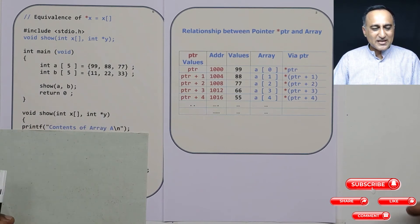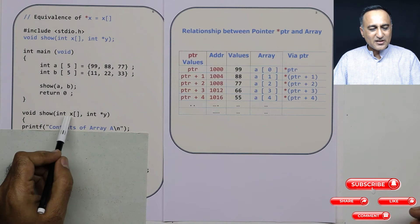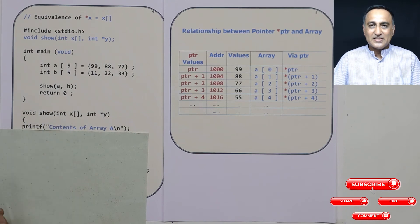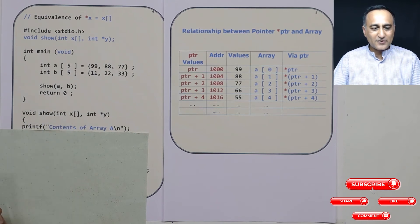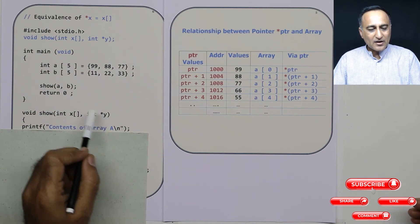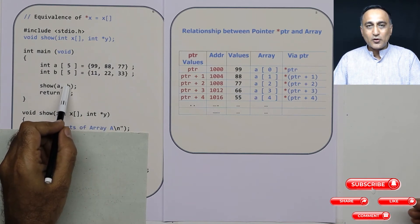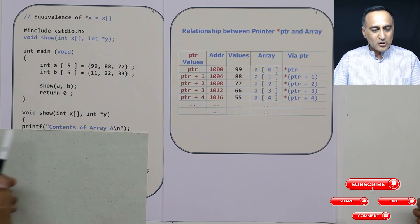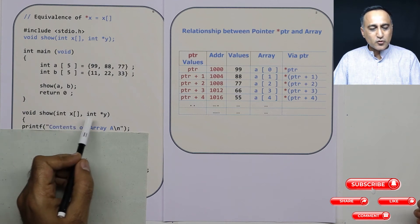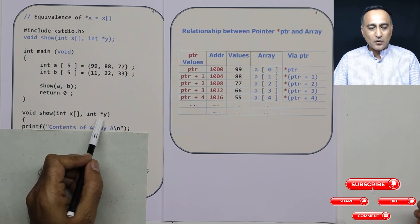The reason they are both the same is x refers to the address of the 0th location of array a, y refers to the 0th location of array b. So whatever you can do using x you should be able to comfortably do using y also.